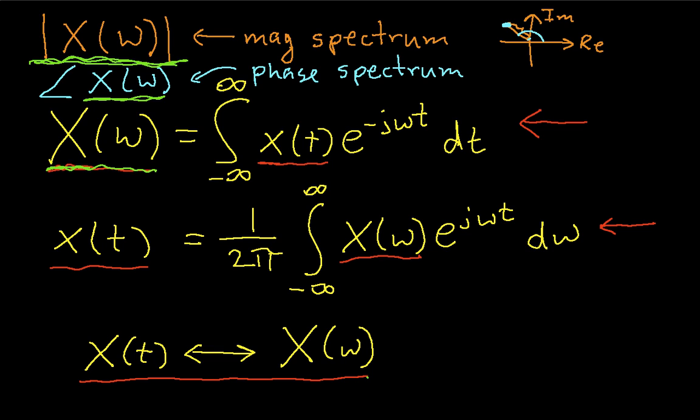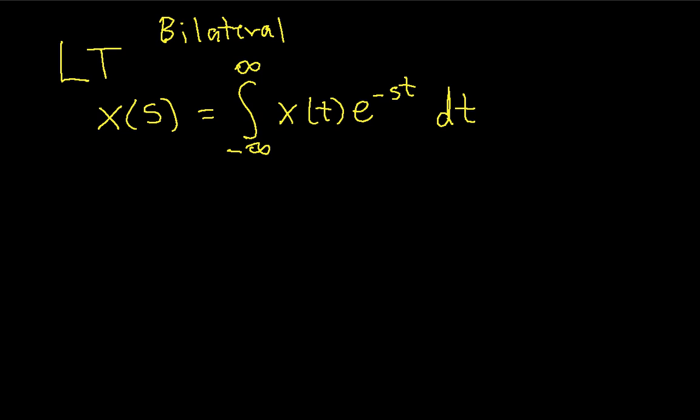So the next thing to discuss is that the Fourier transform, as we've just described it, is very closely related to the Laplace transform. The Laplace transform has a definition that looks like this: x of s is the integral from minus infinity to infinity of x of t, e to the minus st dt. This is the bilateral Laplace transform.